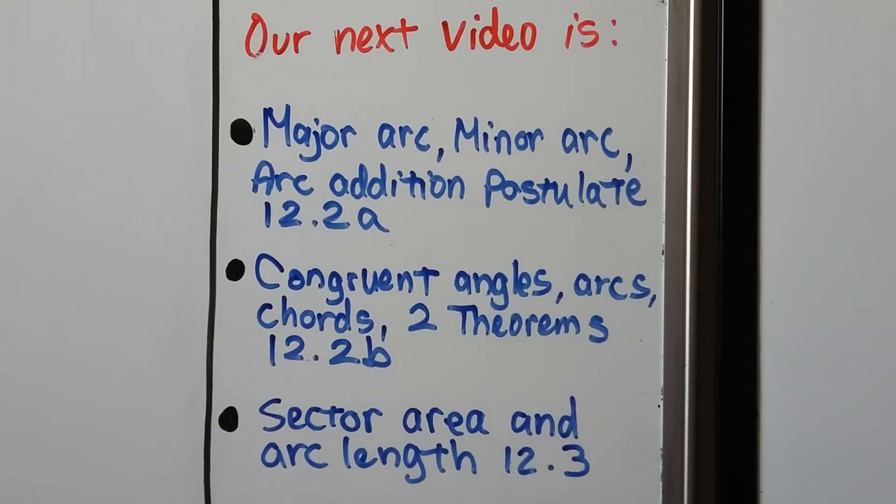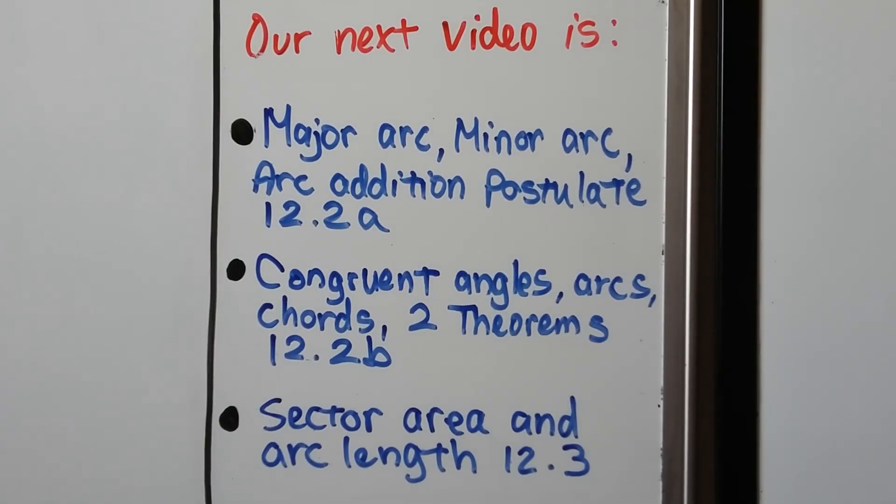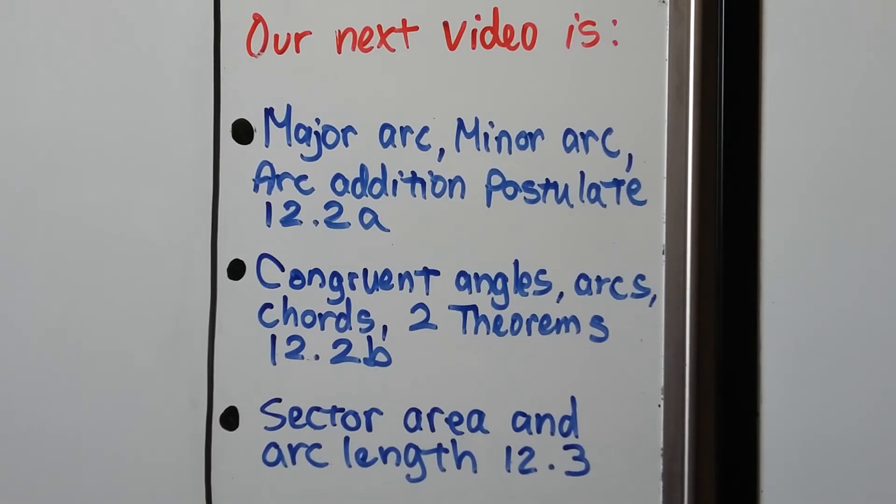So that's it for 12.1. We're going to move on to 12.2, which is broken into two parts. The first part is about major arc, minor arc, and the arc addition postulate. And the second part of it is congruent angles, arcs, and chords. And I have two more theorems for you. Then we're going to move on to 12.3, where we're going to talk about sector area and arc length.